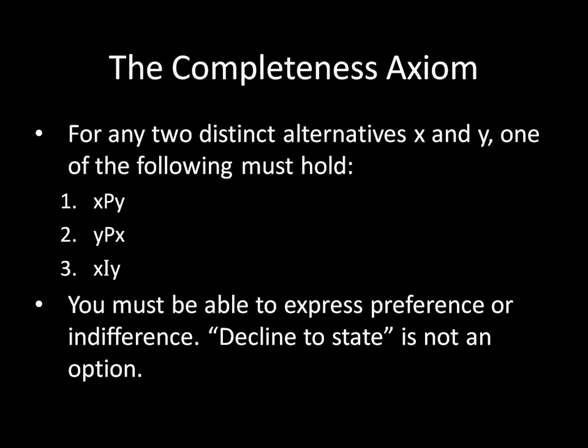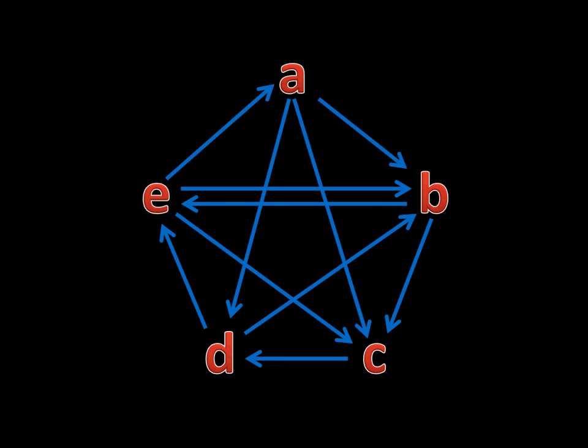To see what this looks like when we're mapping out preferences, this is a complete preference relation. It's complete because if you look at any two alternatives, for example E and A, we have a stated preference relation — this individual prefers E to A. If you take another one, say E and B, that individual is indifferent between E and B. You can see the two arrows that run in between E and B. Likewise, if we look at B and C, this individual prefers B to C. If you take any two alternatives, you see the stated preference relation. That's a complete preference relation.